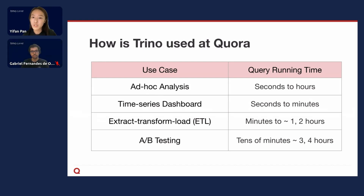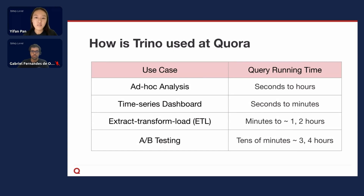Second, we use Trino for our time series dashboards. These dashboards track internal company metrics, like how many people are visiting our sites, the number of questions being asked, the revenue we are generating, and so on. The queries for these dashboards usually run within a few seconds to a couple of minutes.